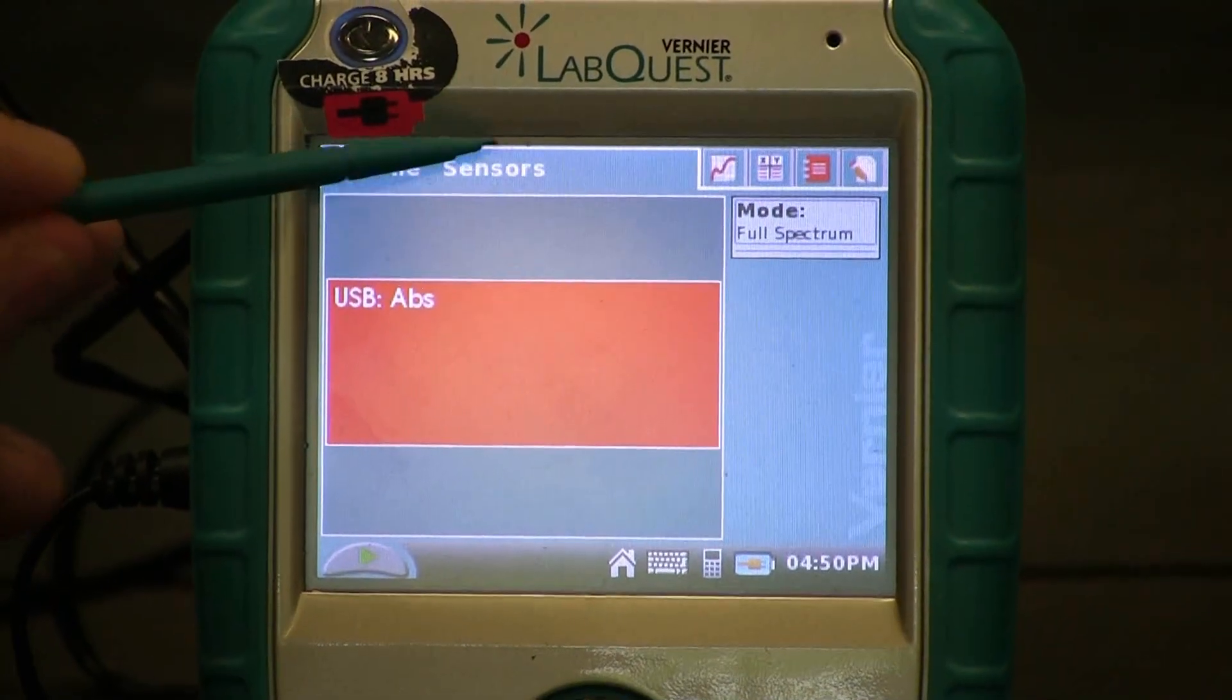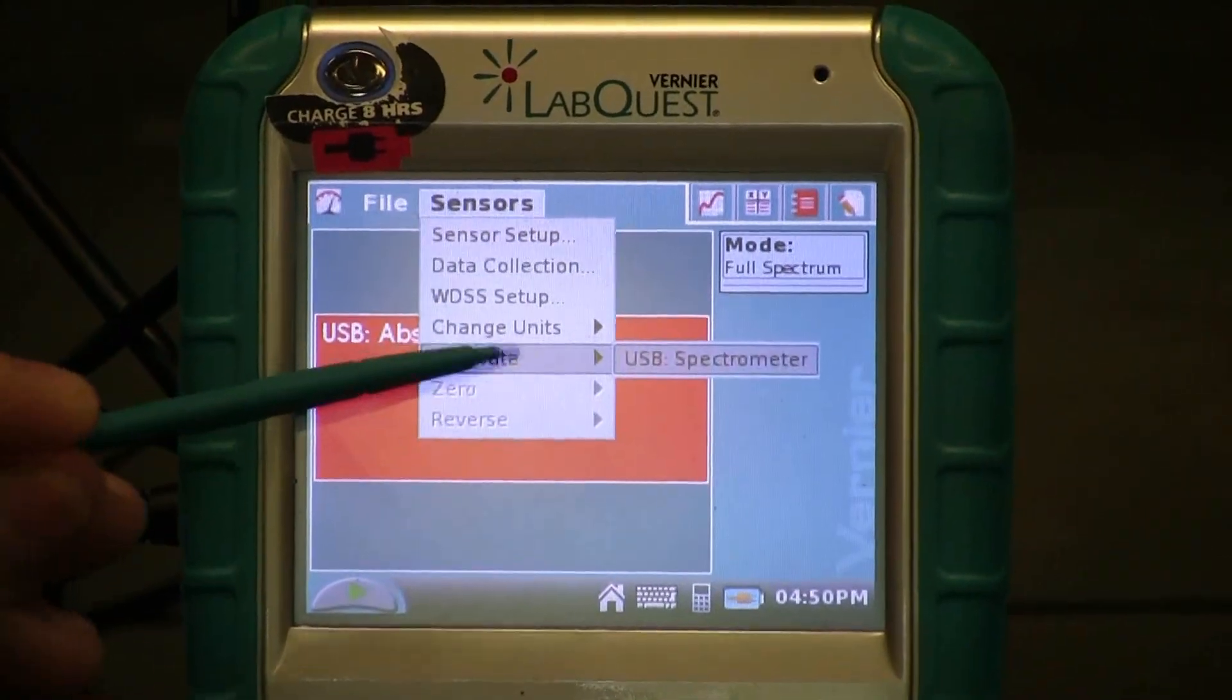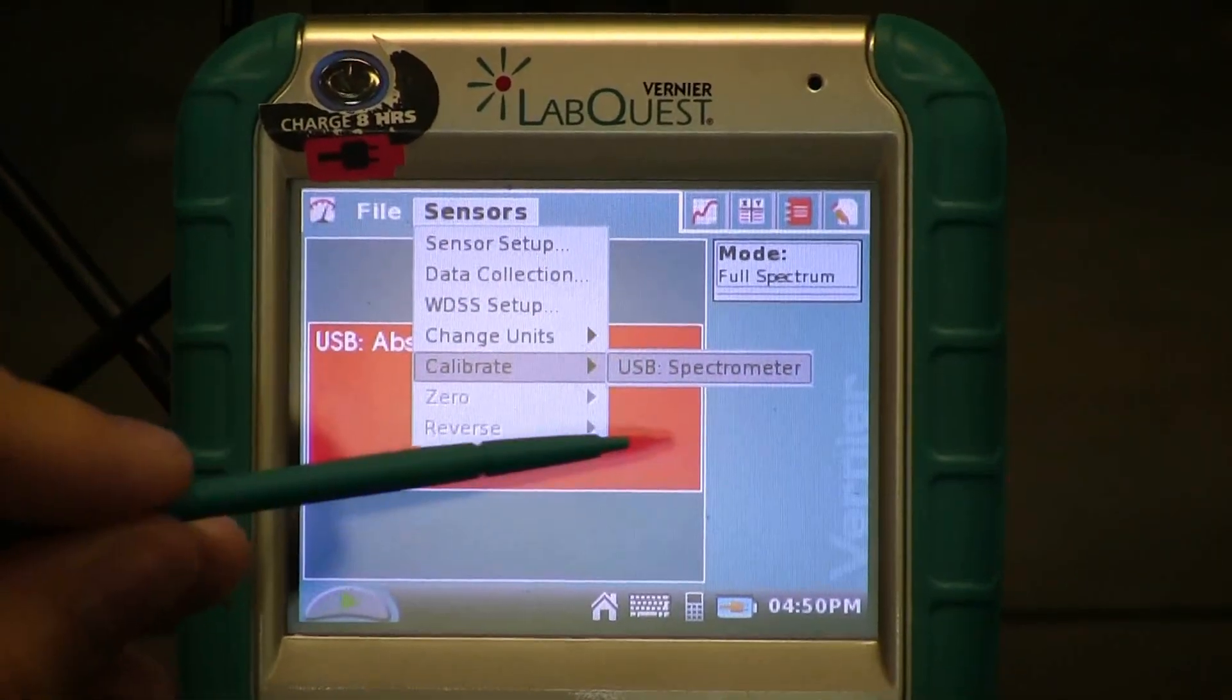You are now ready to calibrate. Start by clicking on Sensors, Calibrate, USB spectrophotometer.